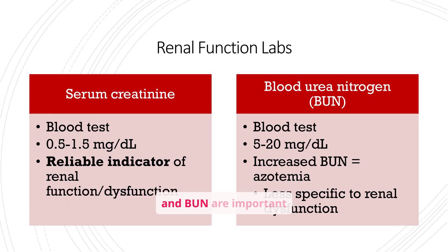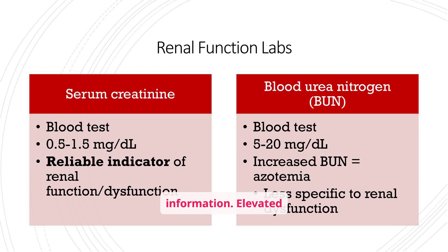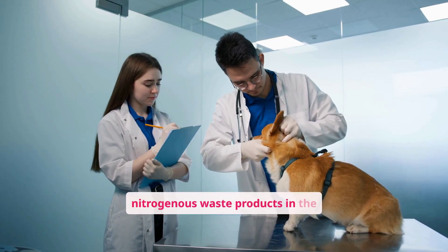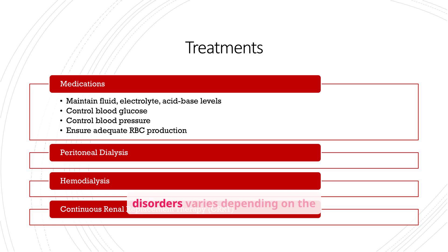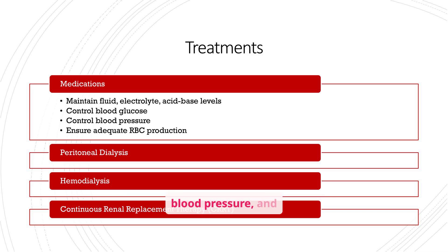Serum creatinine and BUN are important renal function labs. Serum creatinine is a reliable indicator of renal function, while BUN is less specific but can still provide valuable information. Elevated BUN can indicate azotemia, which is a buildup of nitrogenous waste products in the blood. Treatment for renal disorders varies depending on the underlying cause and severity. It may include medications to maintain fluid, electrolyte, and acid-base balance, control blood glucose and blood pressure, and ensure adequate RBC production. In severe cases, dialysis or CRRT may be necessary.